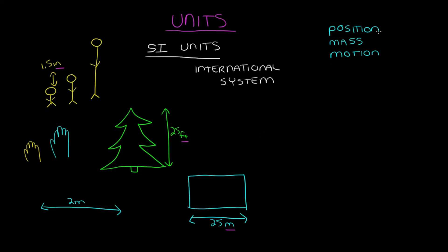We'll use meters to describe position or length, kilograms for mass, and if we're talking about the motion of something, meters per second.